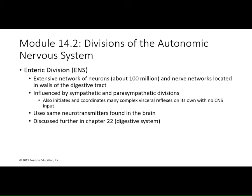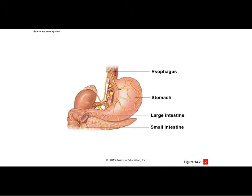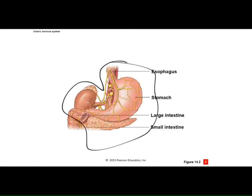The enteric nervous system is another division I haven't mentioned much. You have over 100 million neurons located within the walls of your digestive tract. They are influenced by both the sympathetic and parasympathetic nervous systems, use the same neurotransmitters we'll discuss, and we'll talk more about them when we get to the digestive system later in the course.